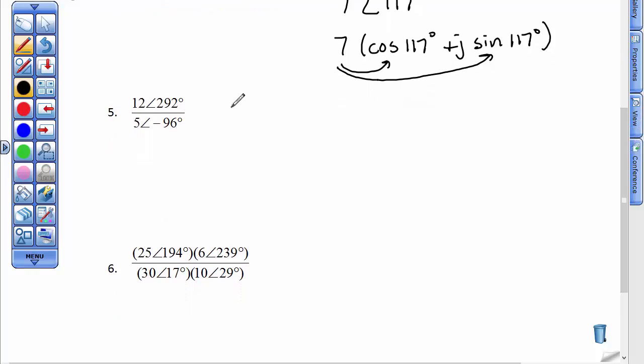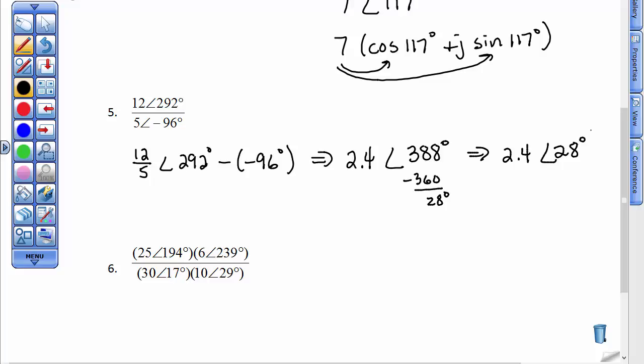So the next one, 12 divided by 5 is 2.4, I believe, and then 292° minus -96°, which means to add. So the 12 divided by 5, I'm going to write as 2.4, and when you take 292 and add 96, you get 388°, but that's bigger than 360°. So let's subtract the full 360° so that we can report this as an acute, so it's reduced, that's all, so at a reduced angle of 28°.